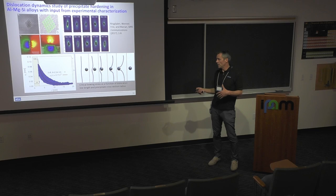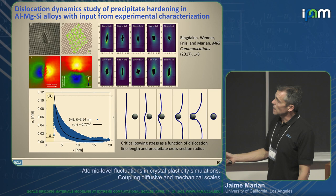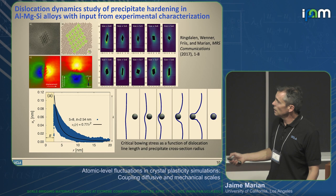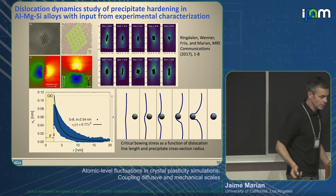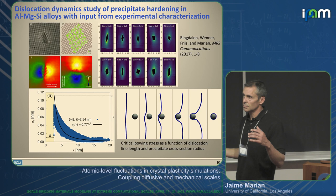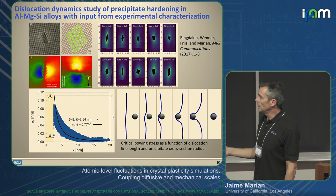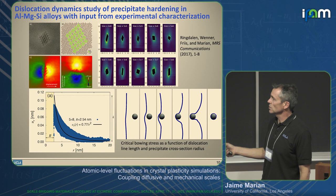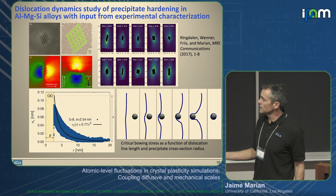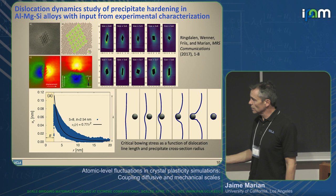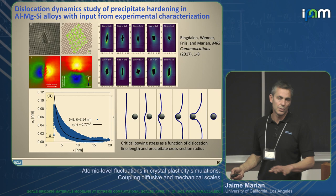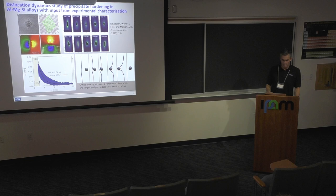We've also used dislocation dynamics to quantify statistically the mechanisms of strengthening in aluminum-magnesium-silicon alloys — called polar alloys — used in Arctic oil and gas pipelines. This was a collaboration with a group at the Norwegian University of Science and Technology in Trondheim. They extract structural information about precipitates using ab initio methods, provide it to us, and we generate elastic interaction laws and plug them into dislocation dynamics to extract reduced-order correlations.